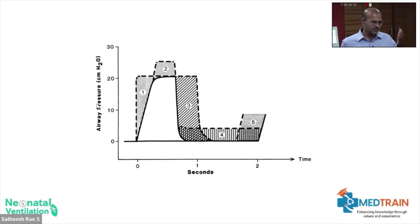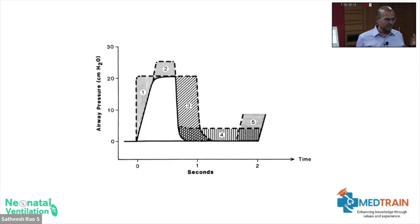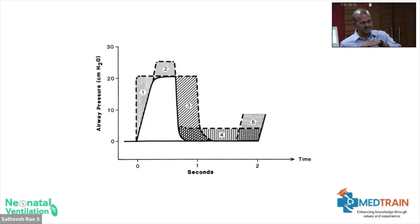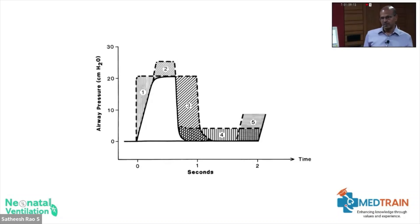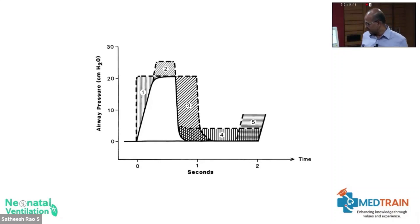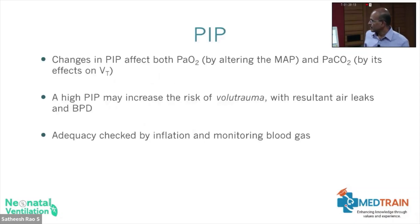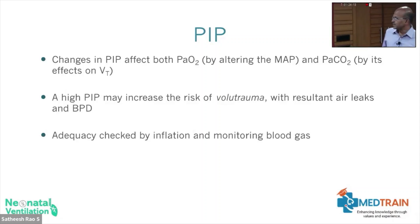Previously we said increasing PEEP may cause CO2 to rise, but that applies only if the lung is already adequately open. If the lung is not open adequately, increasing PEEP helps keep it open, and in a closed-lung situation increasing PEEP alone may also improve CO2 washout in addition to improving oxygenation. Increasing respiratory rate may also change the area. So PEEP affects both PaO2 by altering MAP and PaCO2 by affecting tidal volume through delta P.